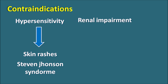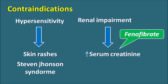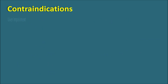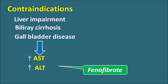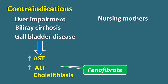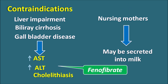The second contraindication is renal impairment: since phenofibrate can increase serum creatinine levels, it is contraindicated in patients with renal impairment. Other contraindications include liver impairment, biliary cirrhosis, and gallbladder disease, because these disorders are associated with increased AST and ALT levels, and phenofibrate can further increase these liver enzymes, worsening liver and biliary impairment. This drug can also produce cholesterol cholelithiasis and gallstones. Additionally, phenofibrate is contraindicated in nursing mothers, as it may be secreted into breast milk and cause abnormalities in infants.